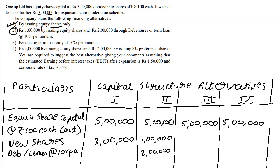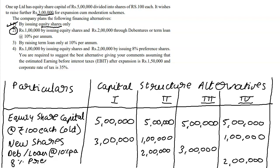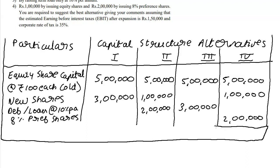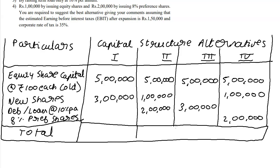In alternative three, it's term loan only at 10% — the full ₹3 lakhs comes here. In alternative four, ₹1 lakh goes into equity shares and ₹2 lakhs into 8% preference shares. Irrespective of capital structure, we started with ₹5 lakhs and are issuing ₹3 lakhs more, so the total across the board is ₹8 lakhs. This is a working note to help decide which capital structure is best.